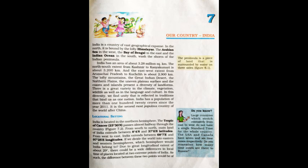Students, Our Country India is vast. It has an area of about 3.28 million square kilometers. In the north, it is surrounded by the Himalayas. In the west, there is the Arabian Sea. In the east, the Bay of Bengal, and in the south, the Indian Ocean washes the shores of the Indian Peninsula.